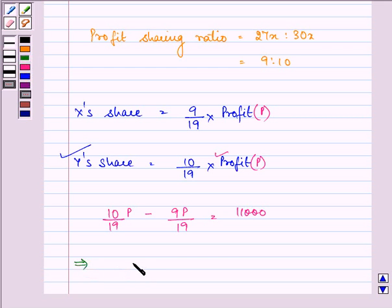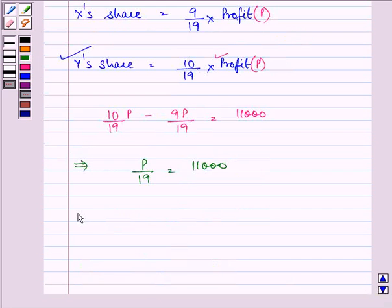So this implies P upon 19 is equal to 11,000. That further implies that the profit is equal to 19 into 11,000, that is rupees 209,000.